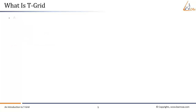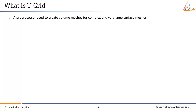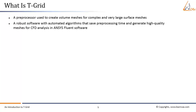T-Grid is an unstructured grid generation software that can volume mesh from a given surface mesh. Volume mesh elements that can be handled by T-Grid are tetrahedral, hexahedral, prism, or pyramid. T-Grid provides highly automated grid generation options with minimal human effort and CPU requirement.